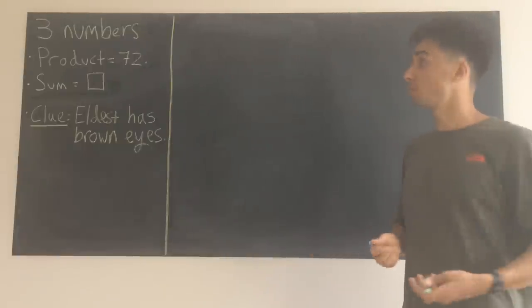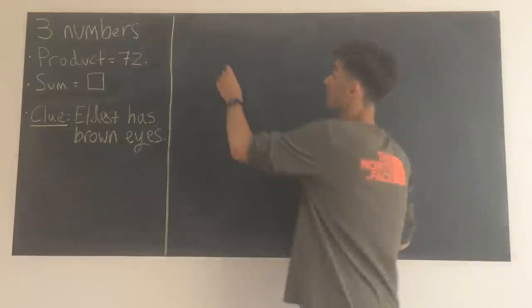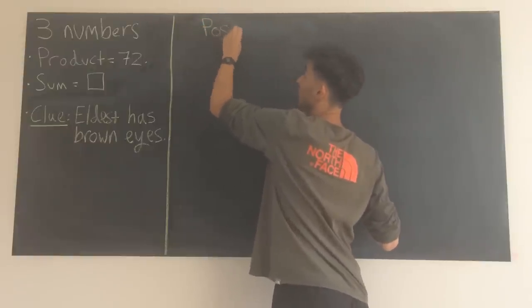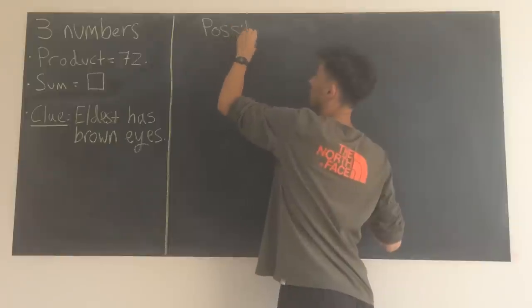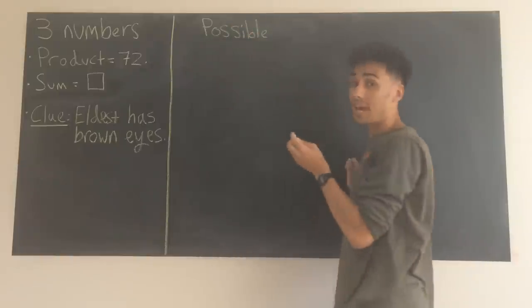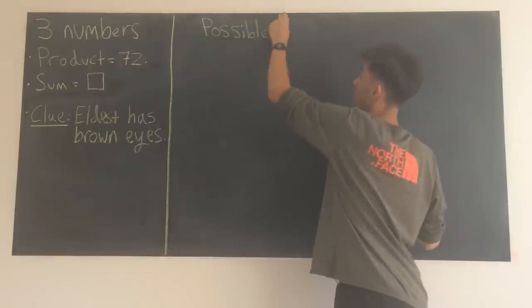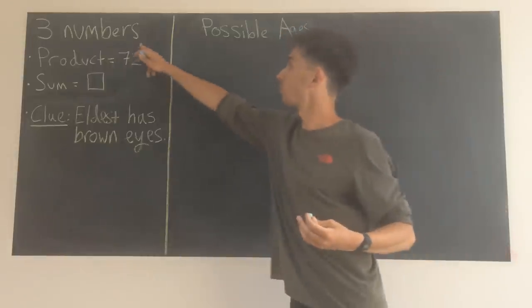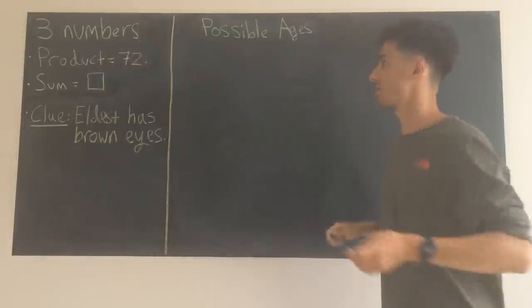What we should do then, because it's actually not that many combinations, is just write out all the possible ages. So I'm going to start a bit of a table of possible ages. And there's every possible combination of three numbers that have a product of 72.